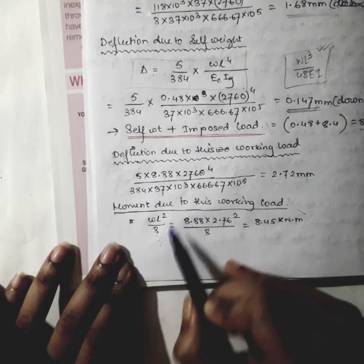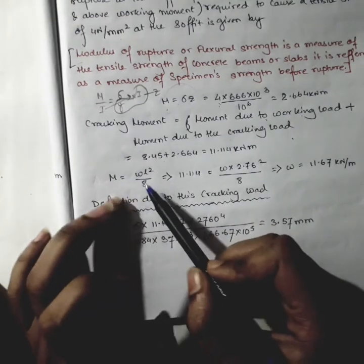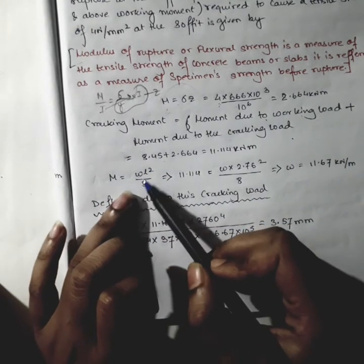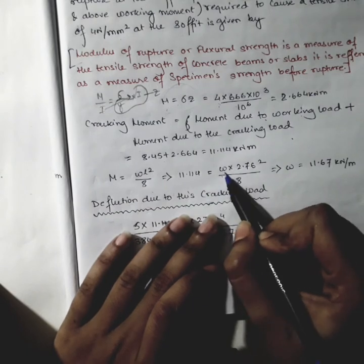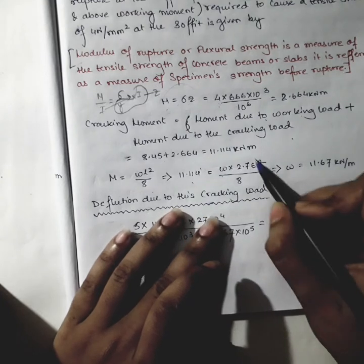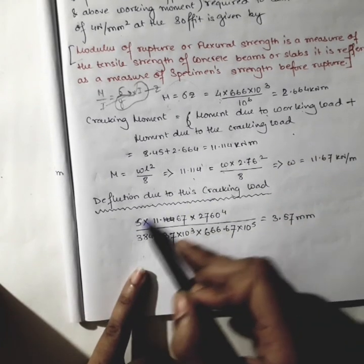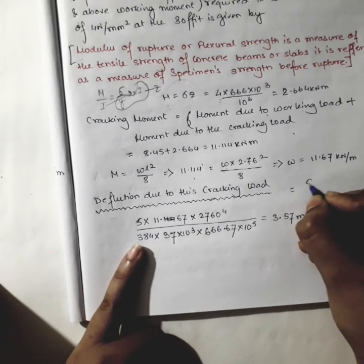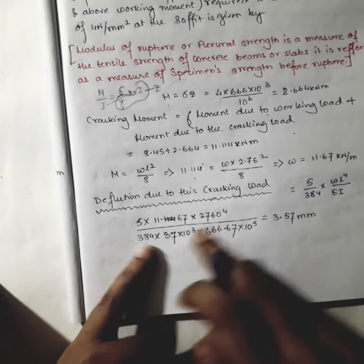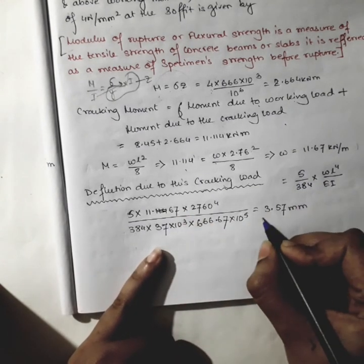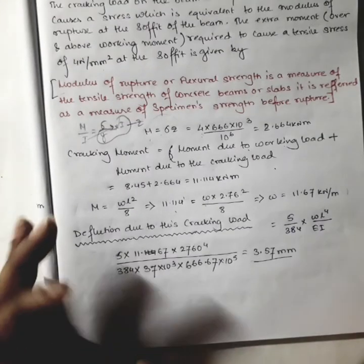Using M = wL²/8, with M = 11.114 kN·m and L = 2760 mm, we solve for the cracking UDL w. Then the deflection due to cracking load is calculated using 5wL⁴/(384EI), giving a deflection of 3.57 mm.